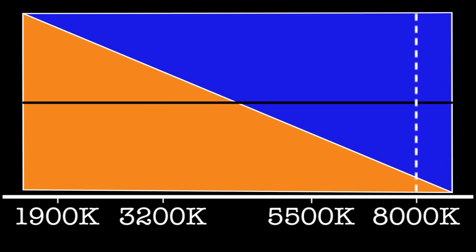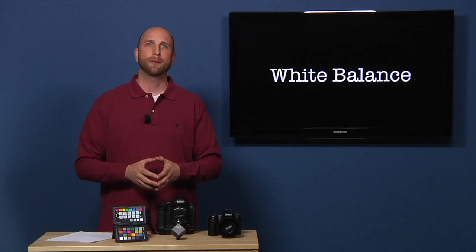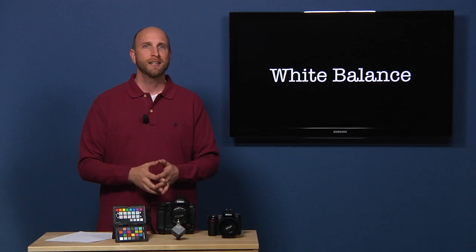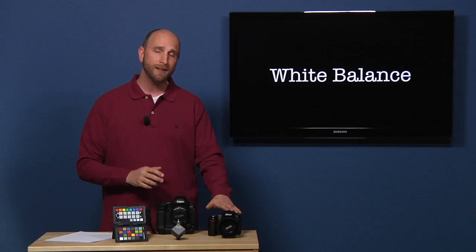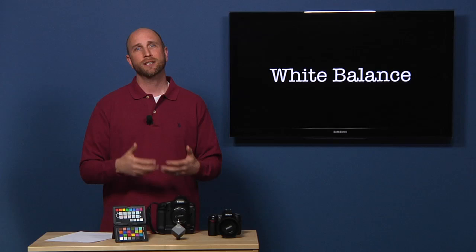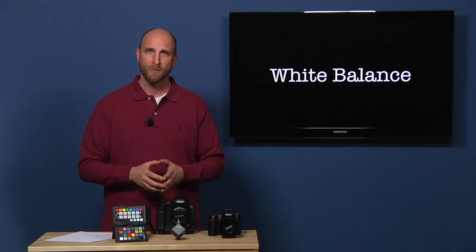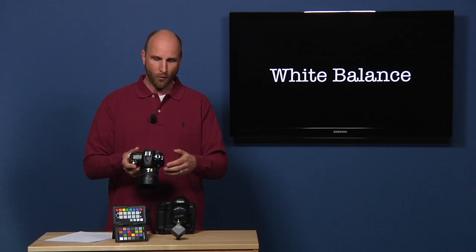Now that we know the basics of color temperature, let's get our white balance in order. Most point-and-shoot cameras, and all modern DSLR cameras, allow you to adjust the white balance. The steps aren't the same for all cameras, so we're going to focus on two of the most popular brands: Nikon and Canon. If you own a different brand, the steps for adjusting your white balance will be very similar — check your camera's user manual for specific instructions. On most DSLRs, you can get to the white balance adjustment in one of two ways: using a white balance button, or going into the menus. Many cameras, like this D90, have both a button and a menu setting, so just use what works best for you.